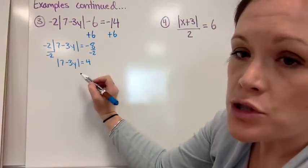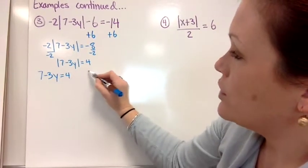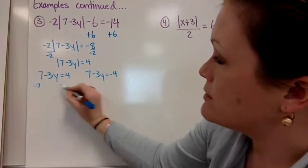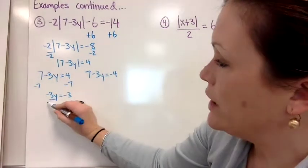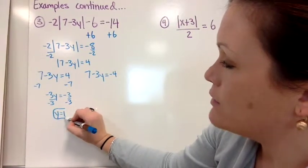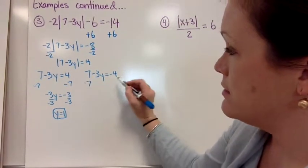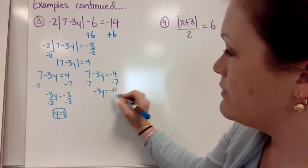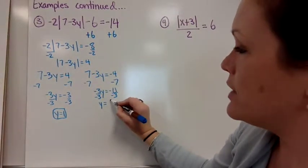From here we set up our two equations: seven minus three y equals four, and seven minus three y equals negative four. For the first equation, subtract seven: negative three y equals negative three, divide by negative three, and y equals one. For the second, subtract seven: negative three y equals negative 11, divide by negative three, and y equals eleven thirds.